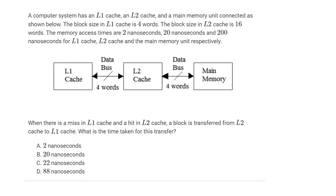Just have a look at this diagram. After it, they are saying: when there is a miss in L1 cache and a hit in L2 cache, a block is transferred from L2 to L1. What is the time taken for this transfer?